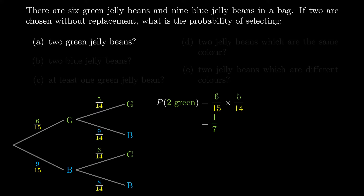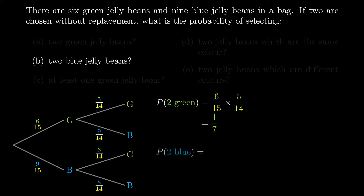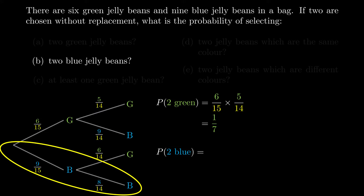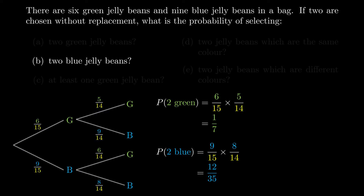The second question asks for the probability of two blue jelly beans. Two blue means we follow those branches of the tree diagram, again in two steps: the first jelly bean is blue with probability 9/15, then we multiply by 8/14 for the second being blue. This gives us 12/35.